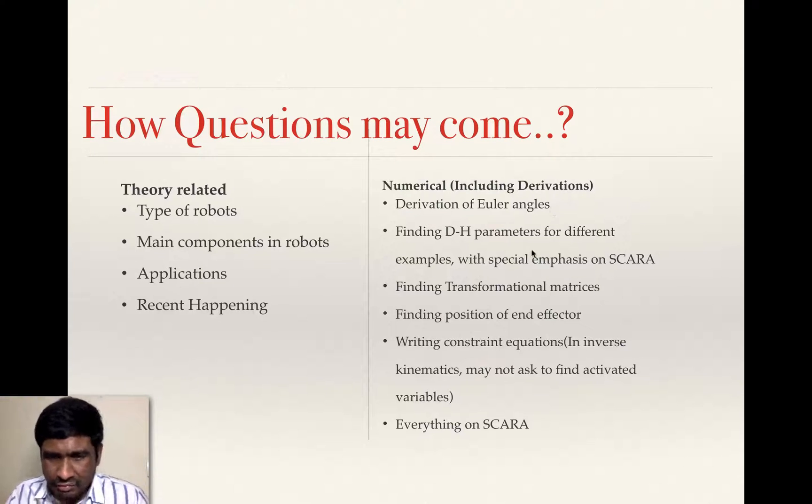These Euler angles are nothing but the transformational or the rotational matrix along about X, Y, Z. So if I rotate any body about X or Y or Z, then those rotational angles made with this coordinate system are called as Euler angles. That is the only thing. And I have already dealt that and then you please refer to that once.